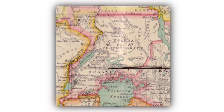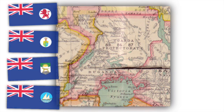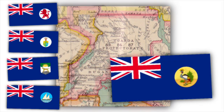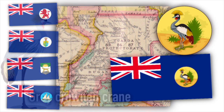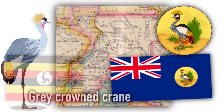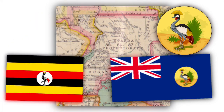The British Protectorate of Uganda was established in 1894, and like many other British overseas territories, it was granted a blue ensign with its own badge. The badge they used on that flag was that of the gray crowned crane, which was worn by the Ugandan soldiers during British rule, and it's the one we see on the modern flag today.